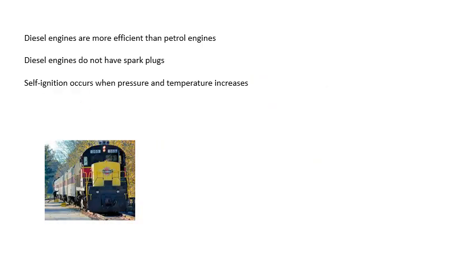Now let's talk about diesel engines. Diesel engines are more efficient. One reason why is to do with something called the compression ratio. Diesel engines don't have spark plugs, and the reason why is because the gas in the cylinder is compressed so much that it gets very, very hot and self-ignition occurs. You don't need a spark from a spark plug — it ignites itself because it gets so hot. Self-ignition occurs when the pressure and temperature rises.